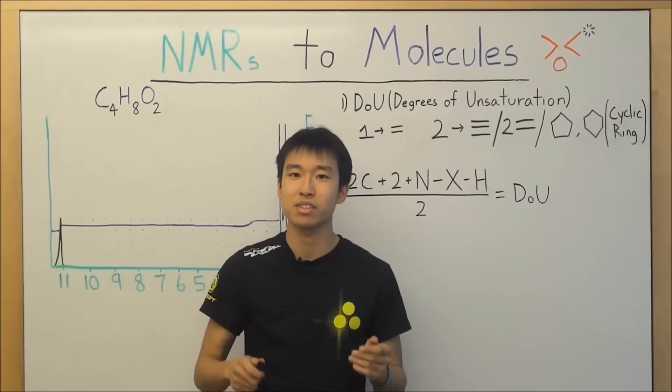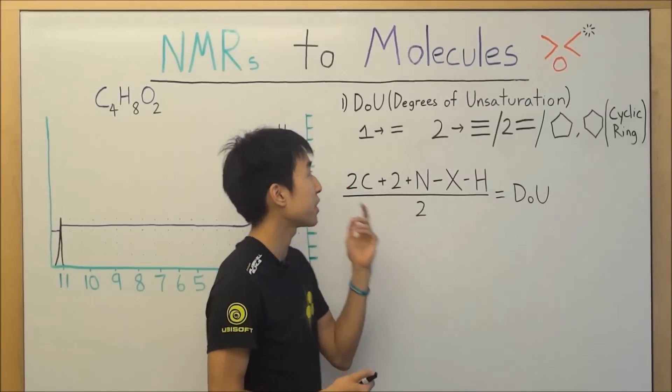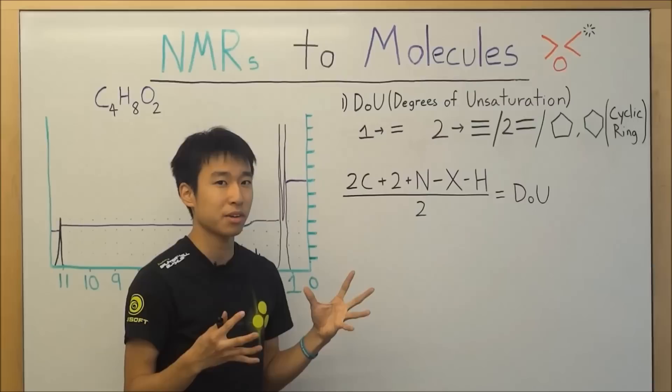Okay, so the first step in trying to solve this NMR puzzle is to figure out degrees of unsaturation. Why do we want to figure this out?